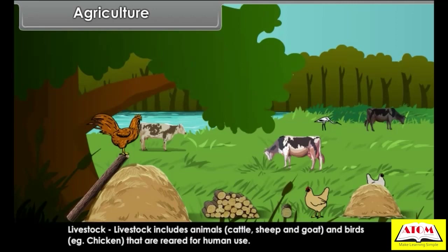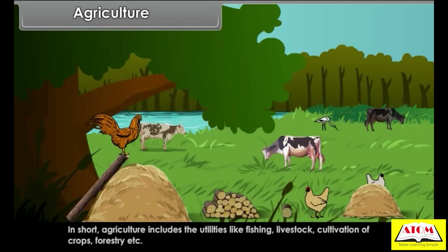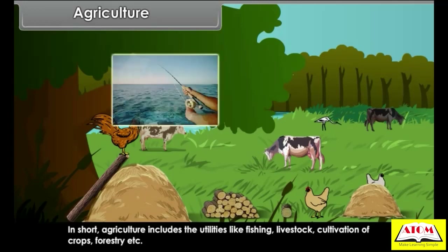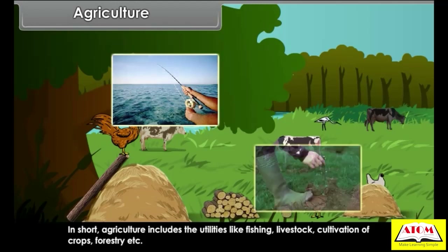Livestock includes animals like cattle, sheep and goat and birds — for example, chicken — that are reared for human use. In short, agriculture includes the utilities like fishing, livestock, cultivation of crops, forestry, etc.